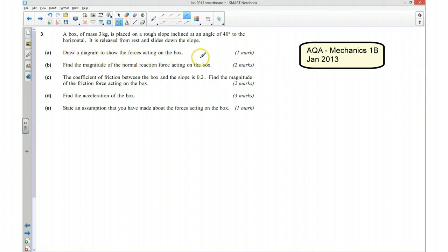So we want to draw a diagram to show the forces acting on the box first of all. So if I draw a nice and big diagram, there we go, there's our slope, and I've got a box on my slope. And we've got an angle of 40 degrees here. We have the forces acting on the slope, so we're going to have the weight of the box which is going to be acting directly downwards. And because it's got a mass of 3 kilograms, it's going to have a weight of 3 times gravity. So I'll write that as 3g.